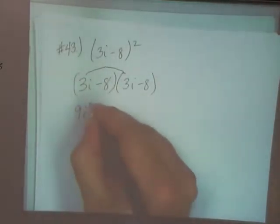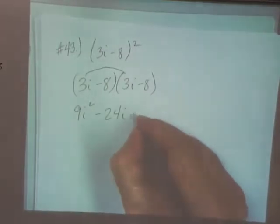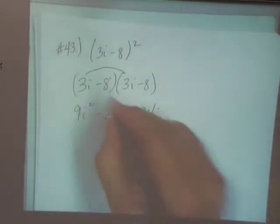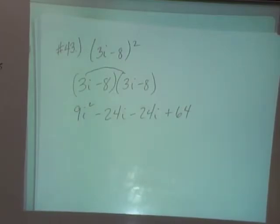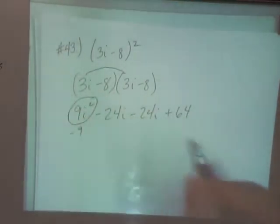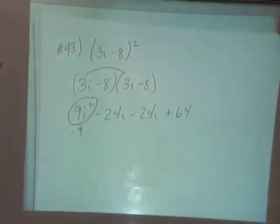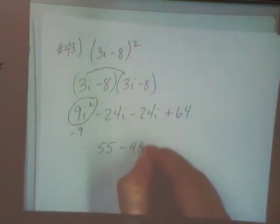I get nine I squared minus 24I minus 24I plus 64. This becomes what? Negative nine. Minus nine. Combined with a positive 64 gives me 55 minus 48I.